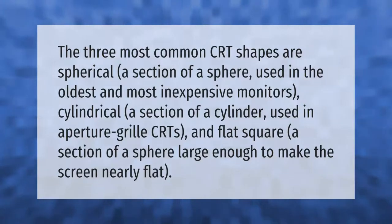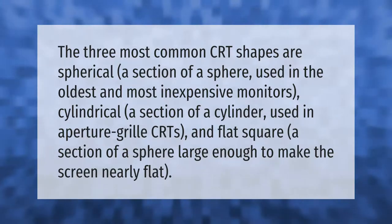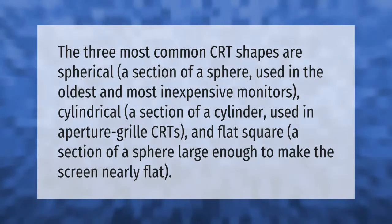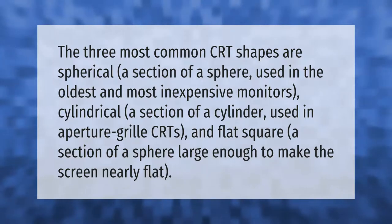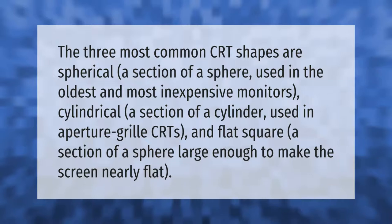The three most common CRT shapes are: spherical, a section of a sphere used in the oldest and most inexpensive monitors; cylindrical, a section of a cylinder used in aperture grille CRTs; and flat square, a section of a sphere large enough to make the screen nearly flat.